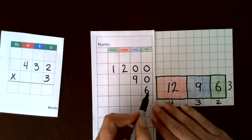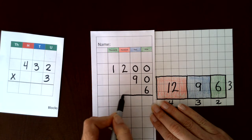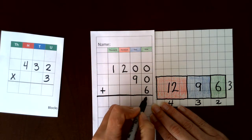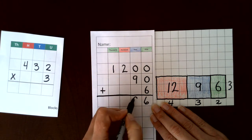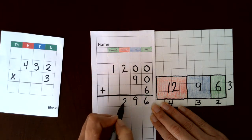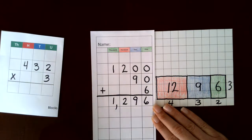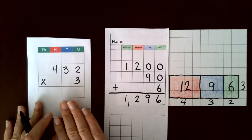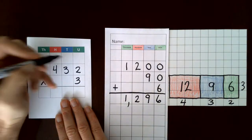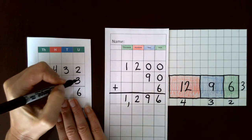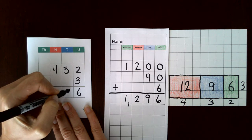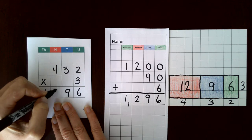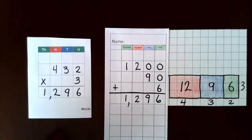Now that we have our partial products written out and analyzed, we're going to add them together. So we have six ones, nine tens, two hundreds, and one thousand. Let's see how this looks with the standard algorithm: 3 times 2 is 6, 3 times 3 is 9, 3 times 4 is 12. And there's nothing else, so we put that there.